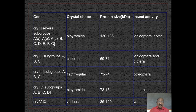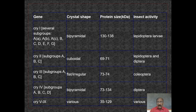This table shows various types of cry genes, the shape of the crystal, the type and size of the protein, and what type of insects are affected. Cry1 has several subgroups: A (Aa, Ab, Ac), B, C, D, E, F, G. These have a bipyramidal shape and after digestion release different types of proteins. Cry2 has subgroups A, B, and C. Cry3 — the insects susceptible to this protein are Lepidopteran and Dipteran larvae.